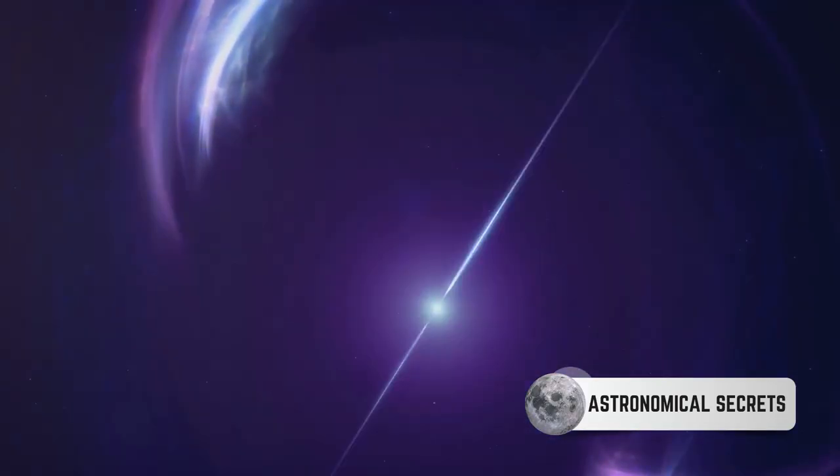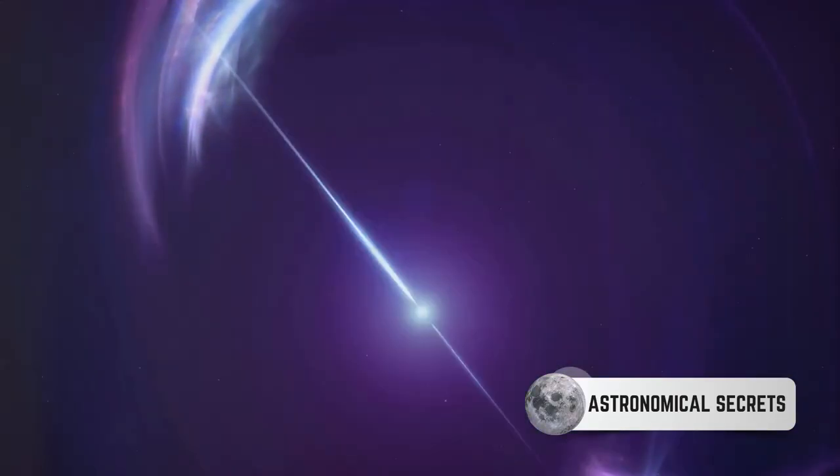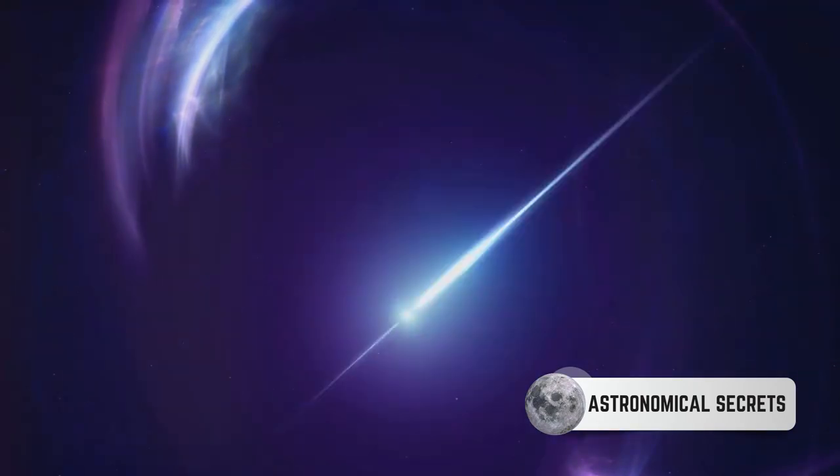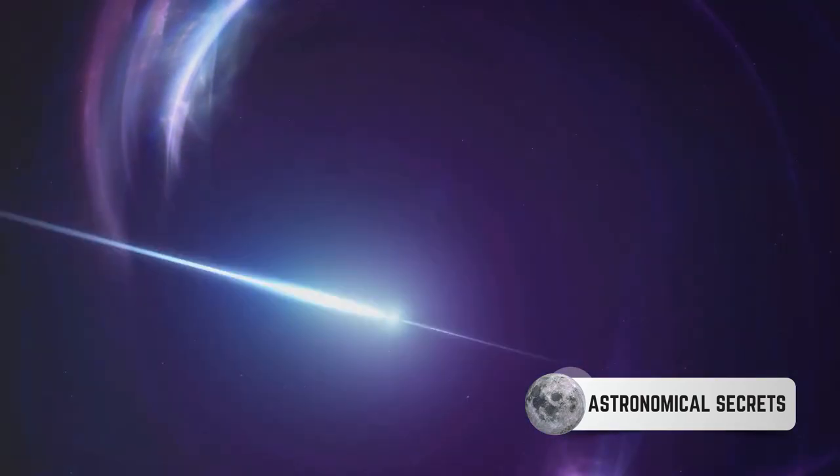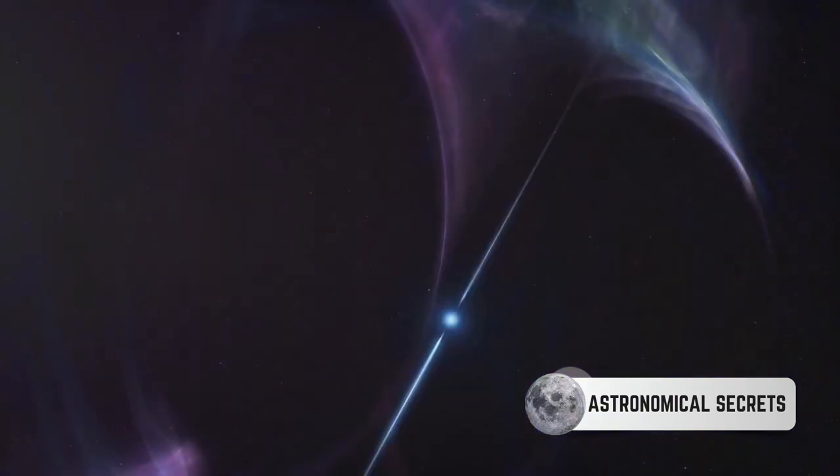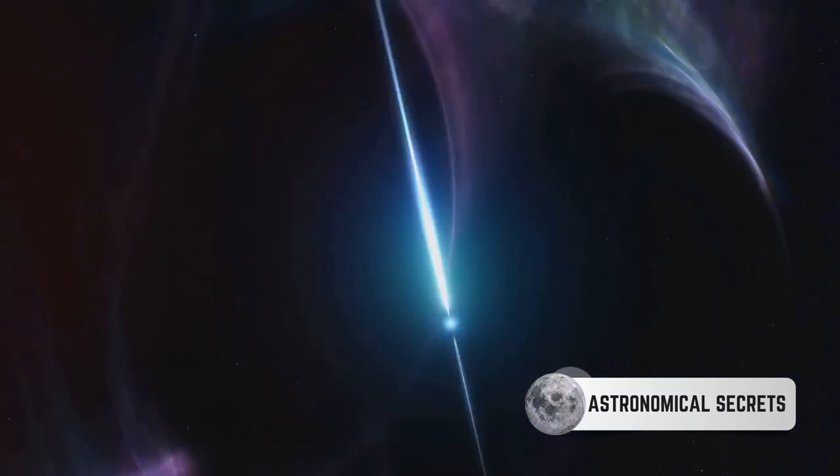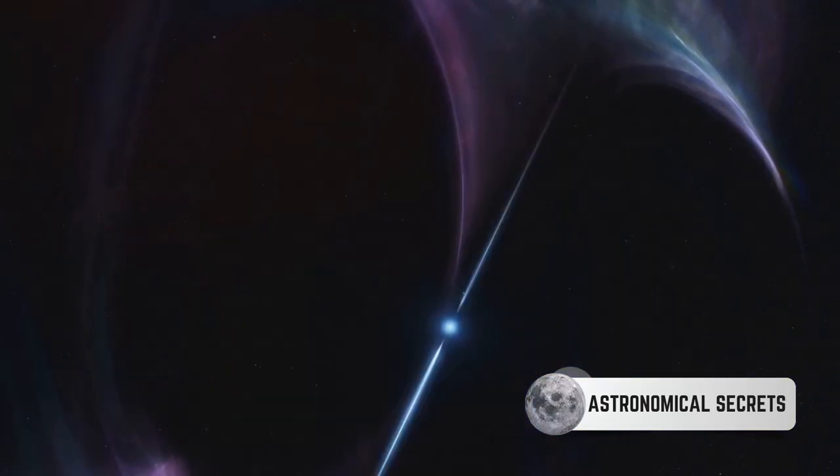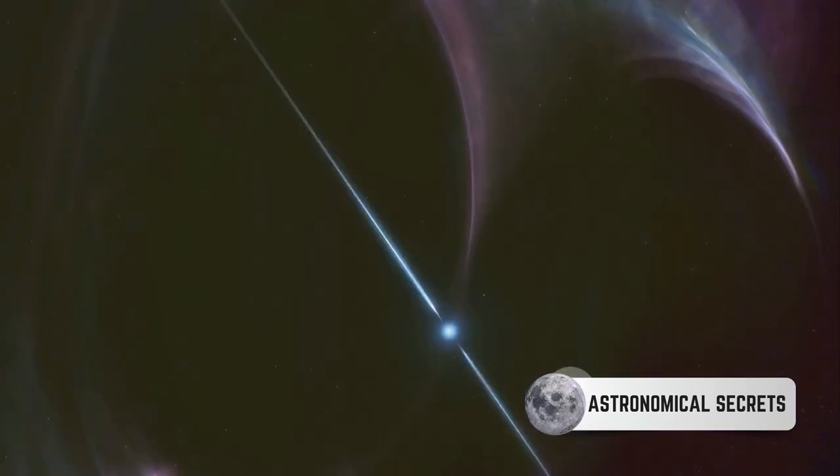But the story doesn't end there. The shockwave from the supernova explosion propels the outer layers of the star into space, leaving behind a dense spinning core. This core, the newborn neutron star, is incredibly dense, with a teaspoon of its material weighing about a billion tons on Earth.